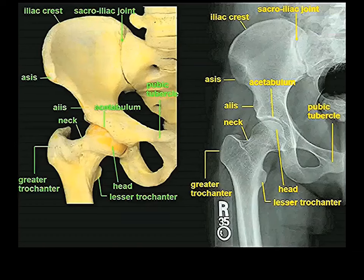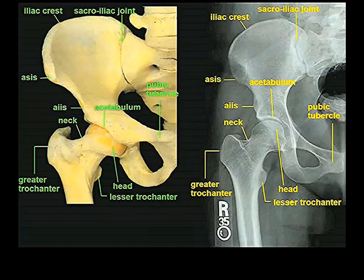These are things you should feel comfortable being able to identify on a standard AP film of the hip joint and associated bones.